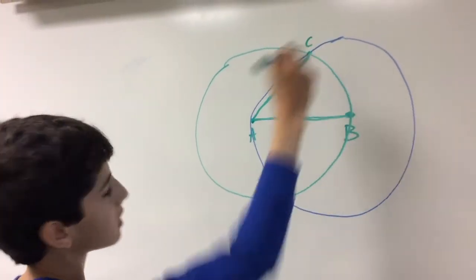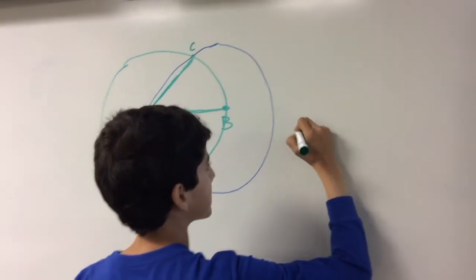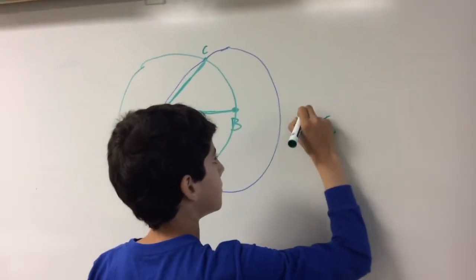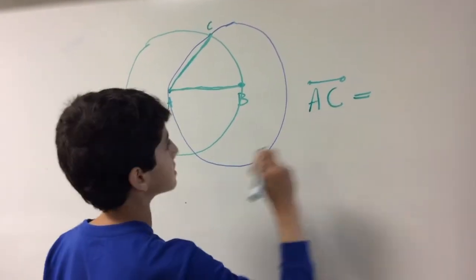Like, if I draw it here or here, they're all the same size. So that means line segment AC equals line segment AB.